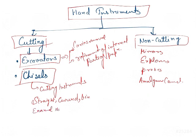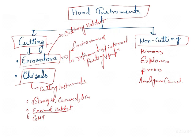Importantly, the enamel hatchet and the gingival marginal trimmer (GMT) are also classified as chisels. The ordinary hatchet, however, falls under the excavator category, while the enamel hatchet is in the chisel category. Other excavators include the hoe and the angle former — these are important instruments to remember for exams.